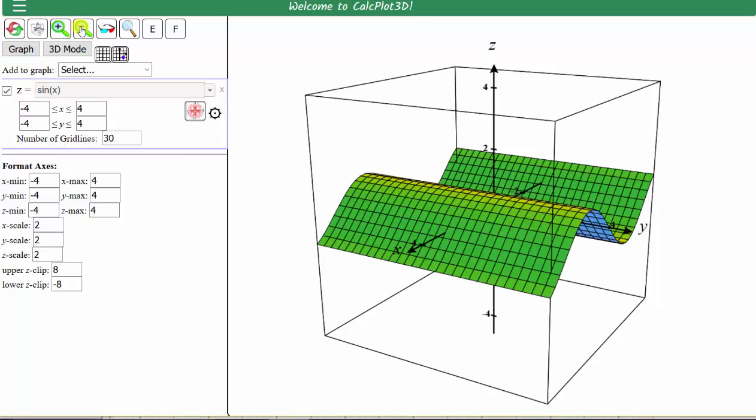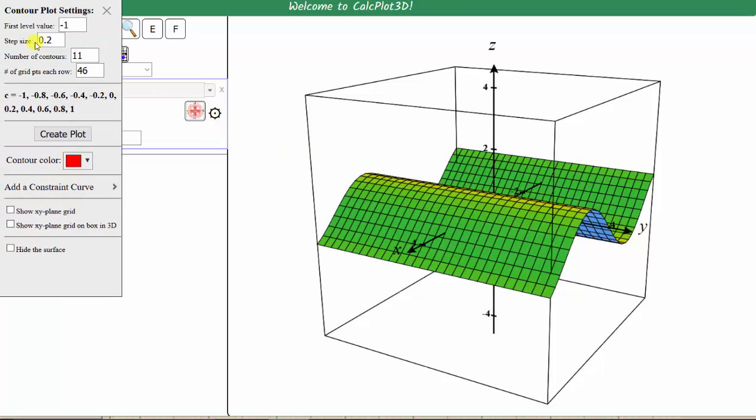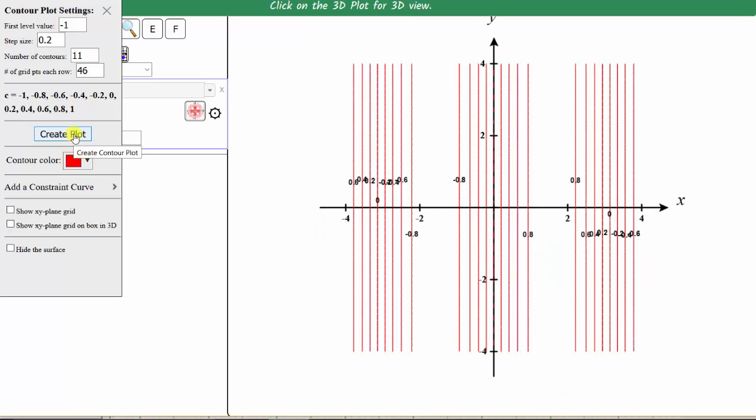Let's go ahead and zoom out once. Notice how now the axes go from negative four to positive four in all directions. Click draw contour plot. Let's use the default settings again, and click create plot. And here's the contour plot for f of x comma y equals sine x.